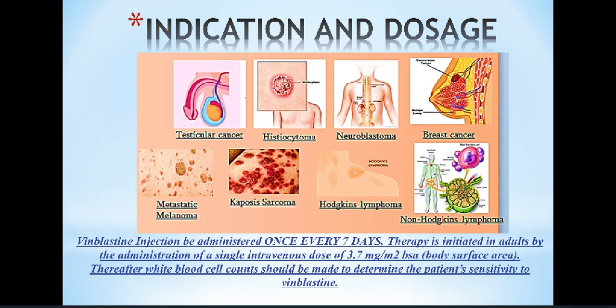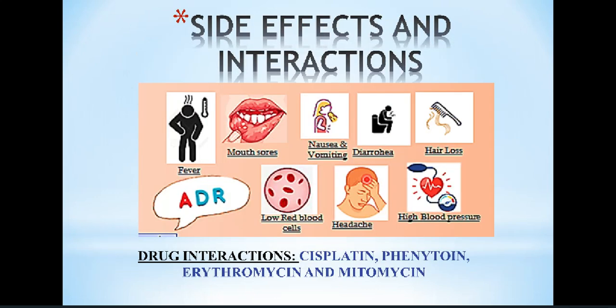Vinblastine injection can be administered once every seven days. Therapy is initiated in adults by the administration of a single IV dose of 3.7 mg per meter square as per the patient's body surface area. Thereafter, white blood cell counts should be made to determine the patient's sensitivity to vinblastine.